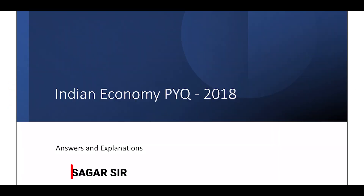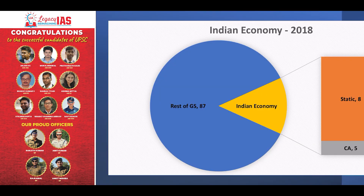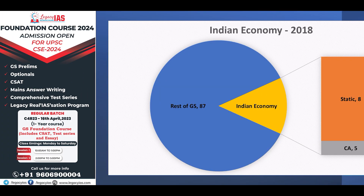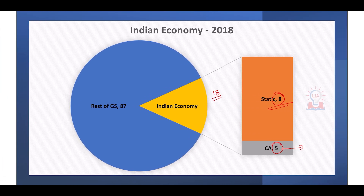Hello and welcome to Legacy IAS Academy. In this video we are going to discuss the previous year questions related to Indian Economy which appeared in the year 2018. There were a total of 13 questions, out of which eight were static-related and five were related to current affairs. Out of these five, around three questions could be easily solved using static knowledge itself.